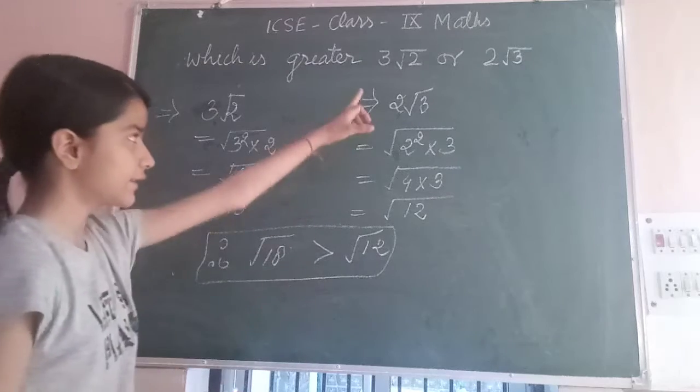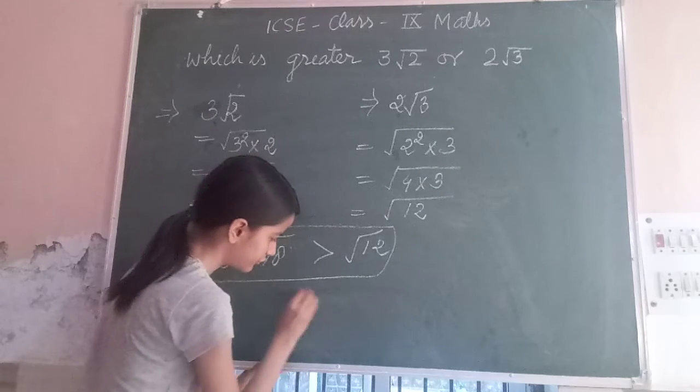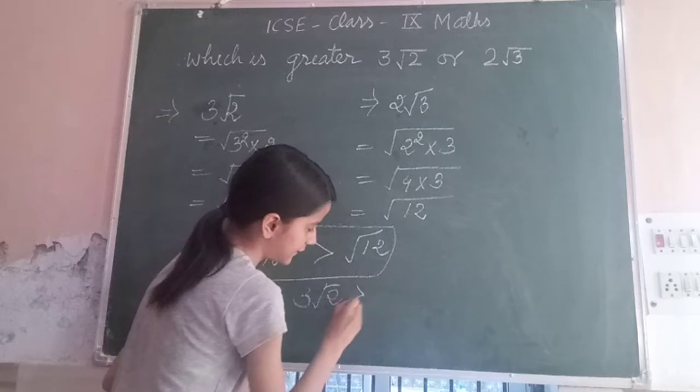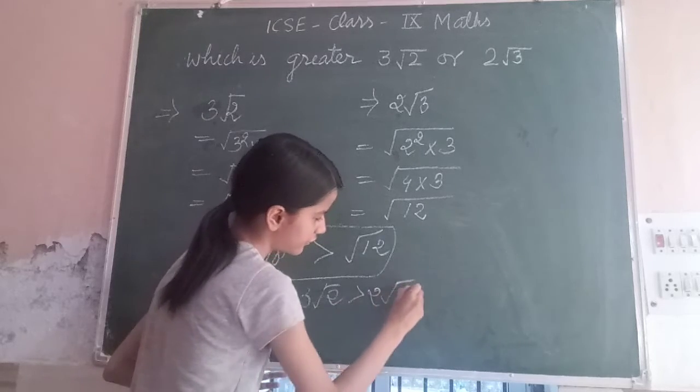This is the answer: 3√2 is greater than 2√3.